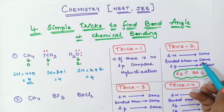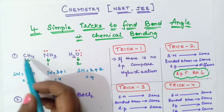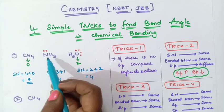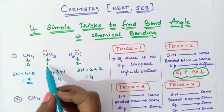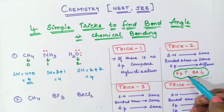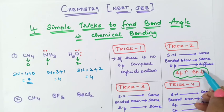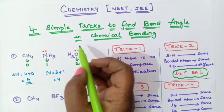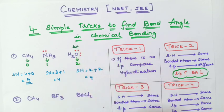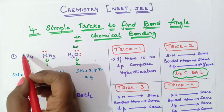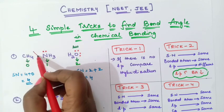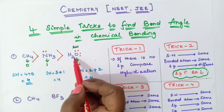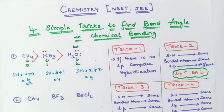Bonded atoms are also the same — hydrogen in all three molecules. And lone pairs are different. So we apply Trick 2: more lone pairs means bond angle decreases. Water has the most lone pairs so it has the least bond angle; methane has no lone pairs so it has the greatest bond angle. The order is: CH₄ > NH₃ > H₂O.